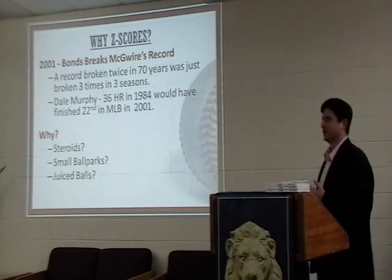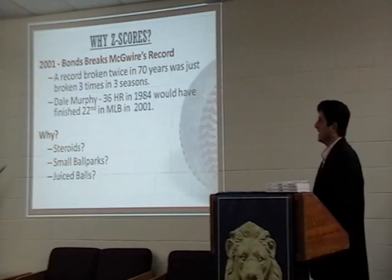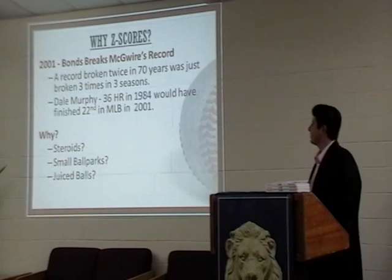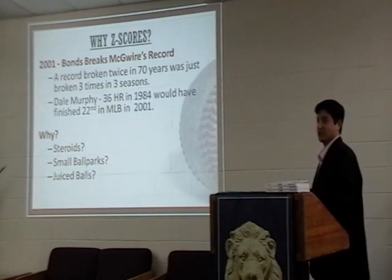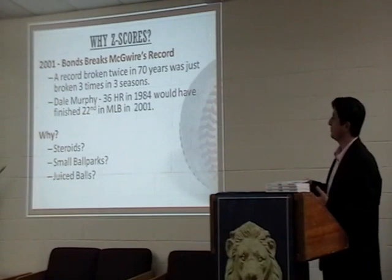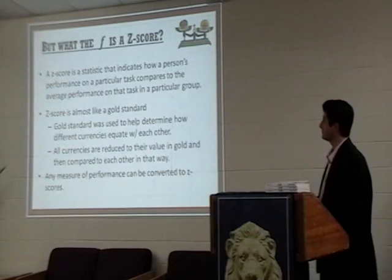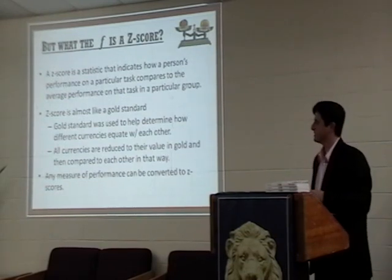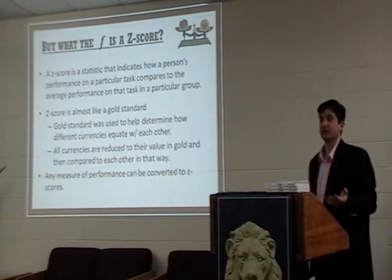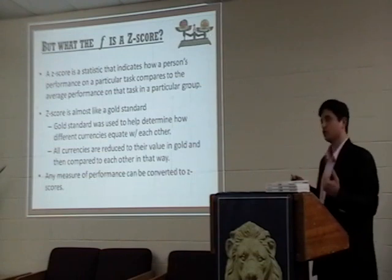Growing up in the 1980s, Dale Murphy was the standout player of that decade. In 1984, Dale Murphy hit 36 home runs and led the league. Had he hit those 36 home runs in 2001, he would have finished 22nd in the major leagues. So that was a league-leading performance in 1984, but it would have been 22nd in 2001 when Barry Bonds set his mark. How can you compare statistics more equitably between eras of baseball history?